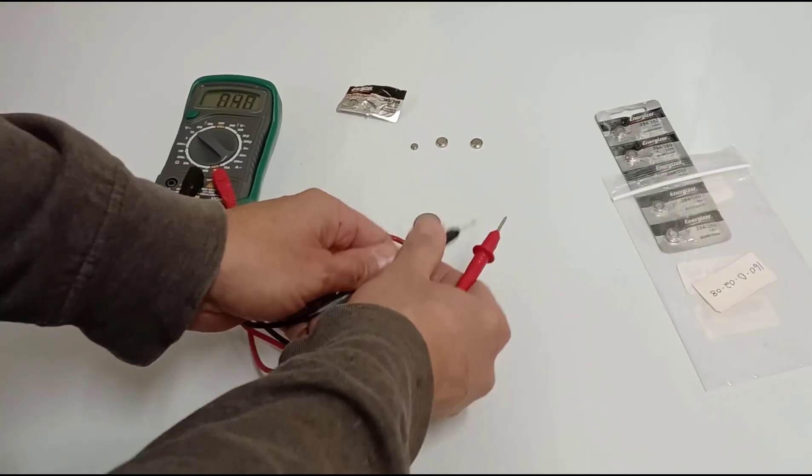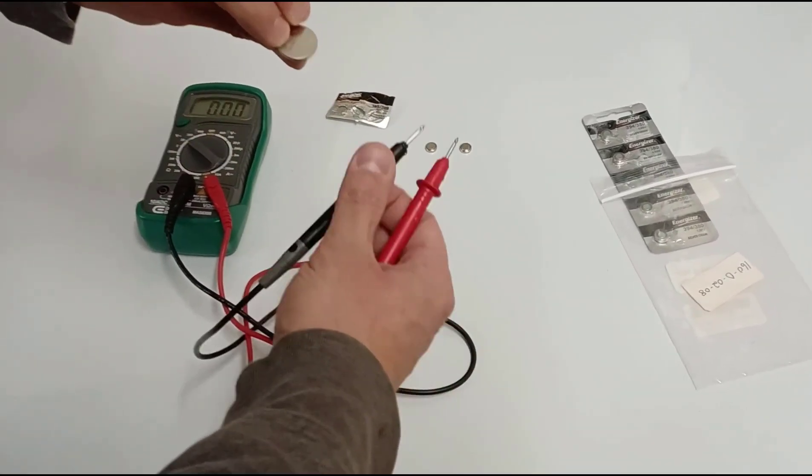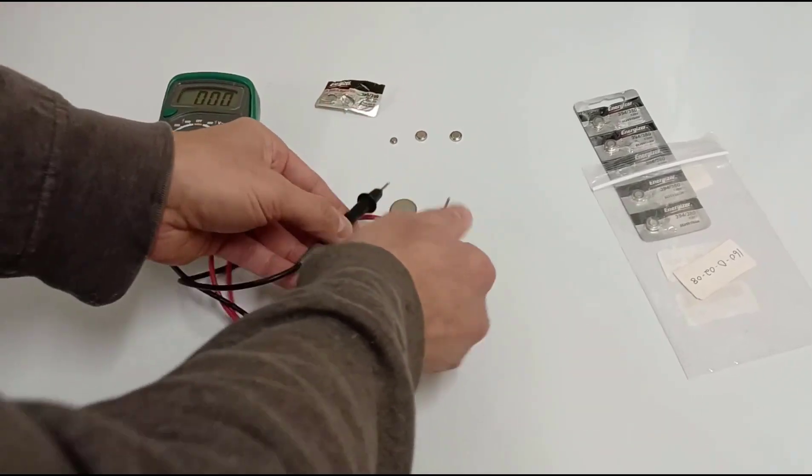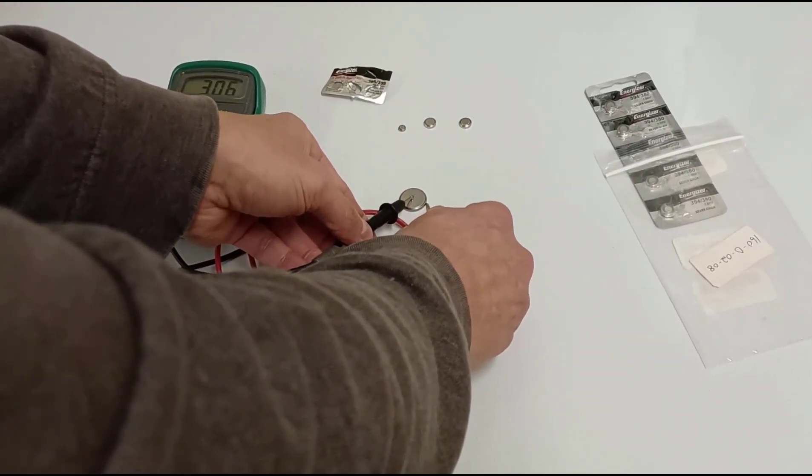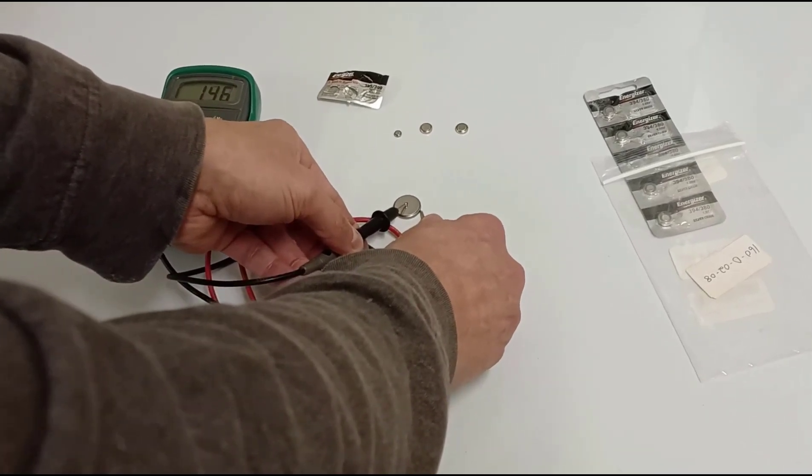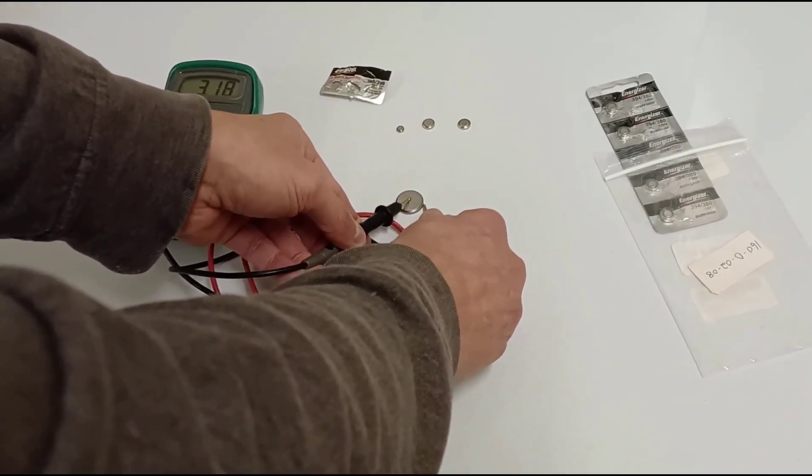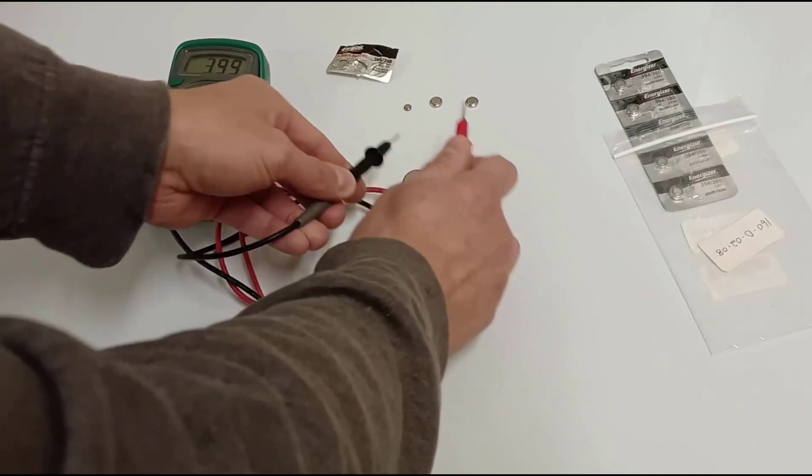See it? 3.28. This is a three volt battery. It says right there, three volts. So it should be around three volts. And it's showing 3.18. So that's perfectly good, that's a perfectly good battery.